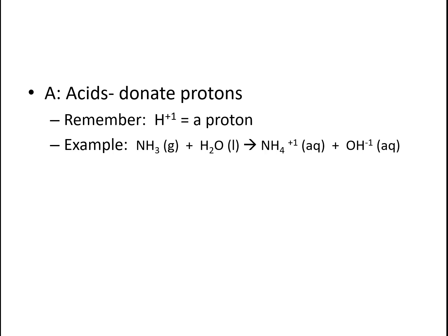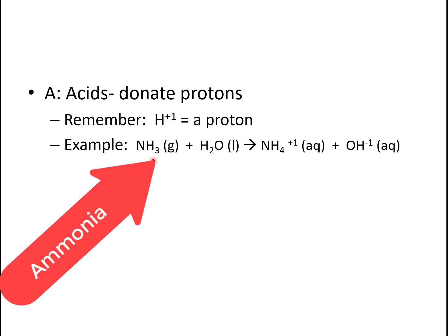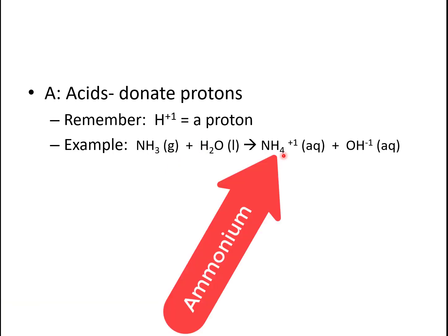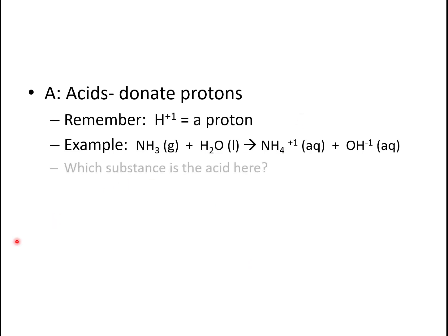This ammonium used to be ammonia, but now it has an extra hydrogen. The water forms the hydroxide ion, and between water and hydroxide, there is one fewer hydrogen. So the water gave a hydrogen to the ammonia, which became ammonium. So the water in this case is acting as our acid, because the water gave away a hydrogen and the ammonia accepted it.